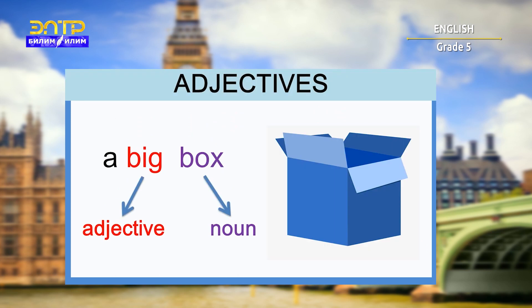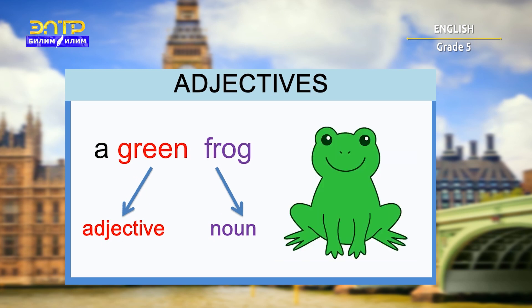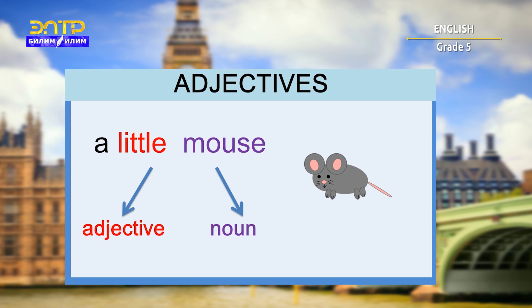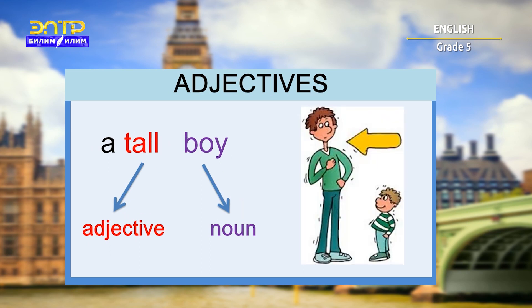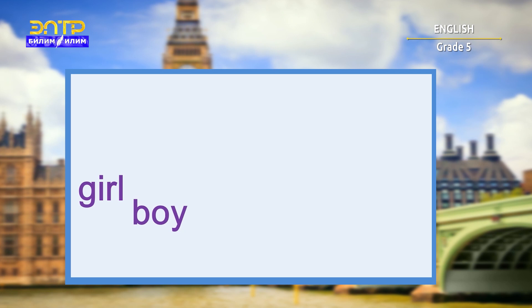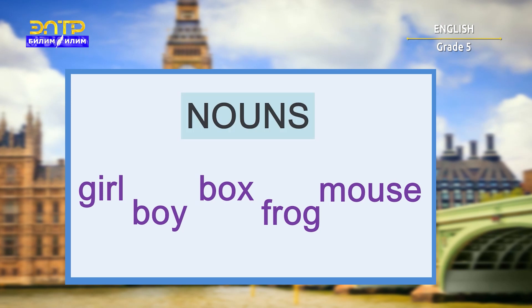A big box. A green frog. A little mouse. A tall boy. Girl, boy, box, frog, and mouse are nouns.